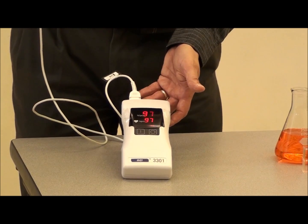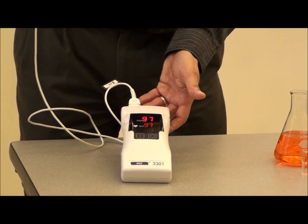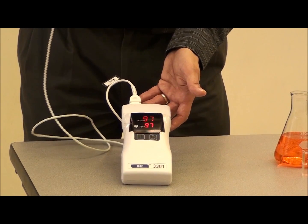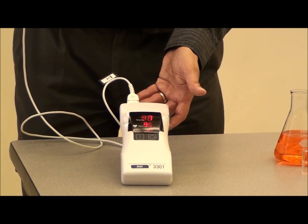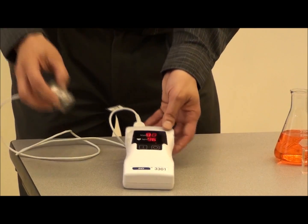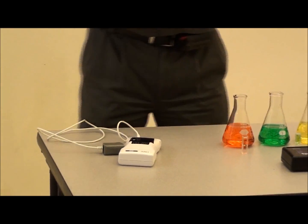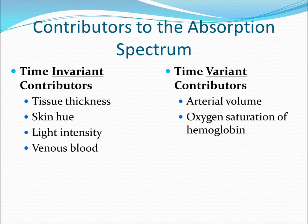In order to properly measure the oxygen saturated hemoglobin percentage, the oximeter must accurately remove those contributions to the absorption spectrum that are constant in time. These constant contributions would be, for example, from the thickness of the tissue in my finger, skin hue, light intensity, and venous blood. Removal of the time-invariant contributions to the signal will leave those contributors that vary with time, including the arterial volume and the oxygen saturation of hemoglobin. This allows the pulse rate to be measured and subsequently the calculation of the oxygen saturation.